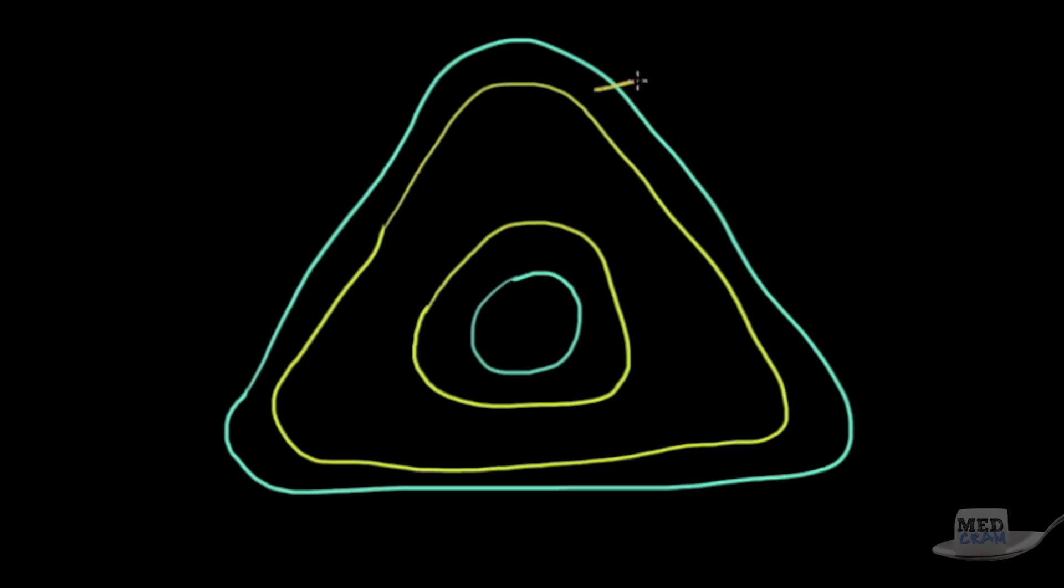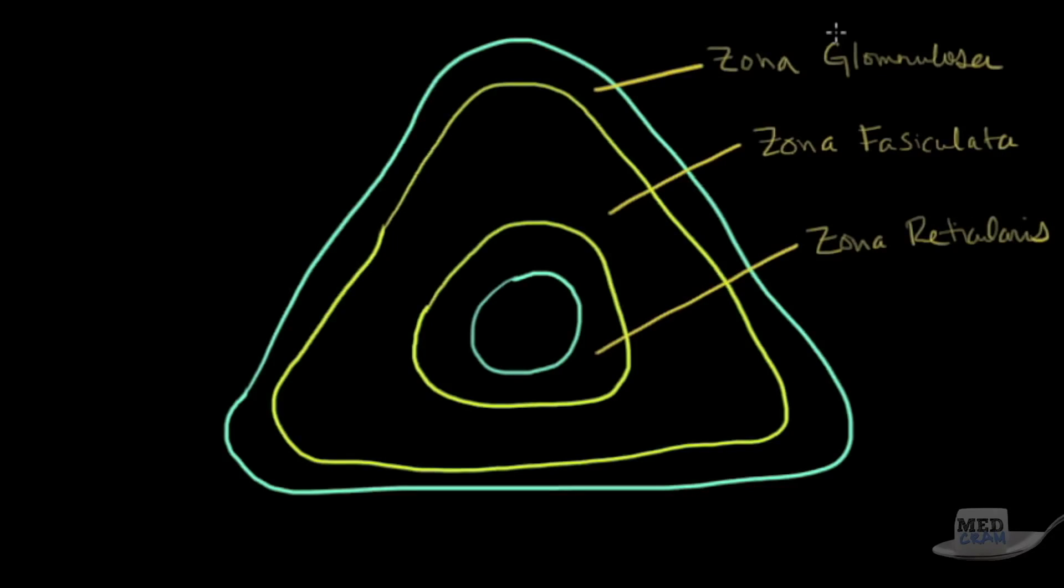The first layer, or the outermost layer, is known as the zona glomerulosa. The middle layer is the zona fasciculata. And the last layer is the zona reticularis. So from outer to inner, it's G, F, R - zona glomerulosa, zona fasciculata, zona reticularis.